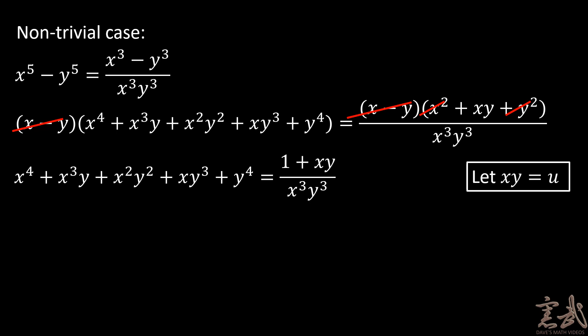Now, to make things a little bit more simple, I'm going to say that x times y is equal to u. This gives me x to the fourth plus y to the fourth plus u times x squared plus u squared plus y squared is equal to 1 plus u over u cubed.